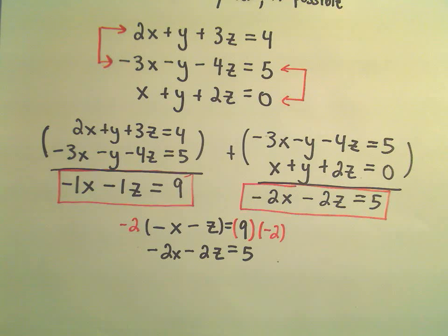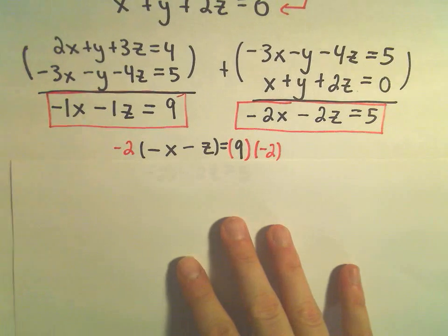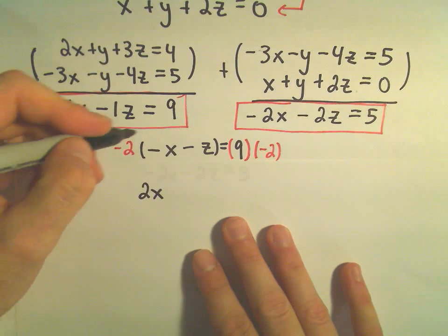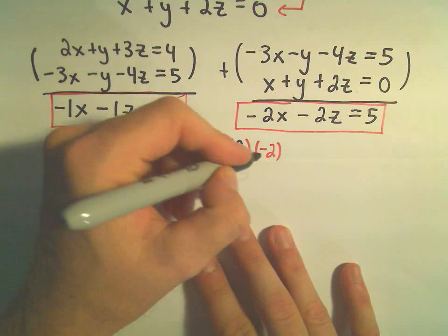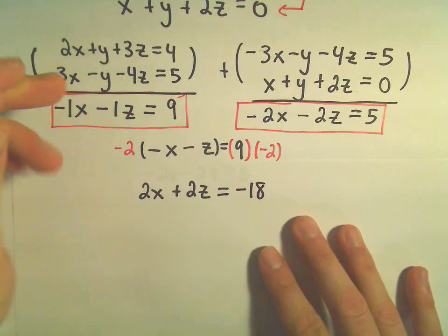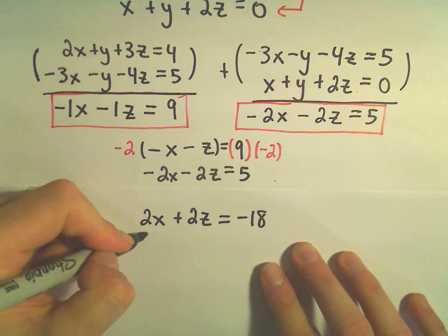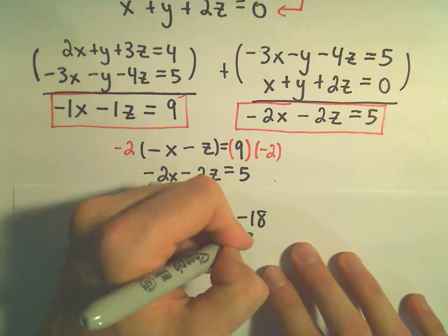But notice if we do that, what's going to happen here? Our first equation, if we distribute, negative 2 times negative x will be positive 2x. We'll get a positive 2z. And then 9 times negative 2 will be negative 18. We've still got our original second equation. We're leaving that one alone. Negative 2x minus 2z equals 5.